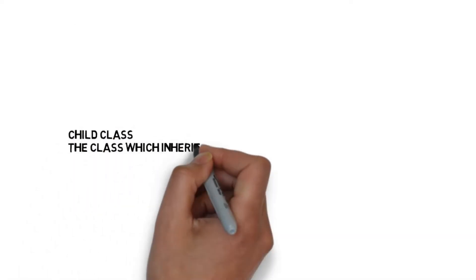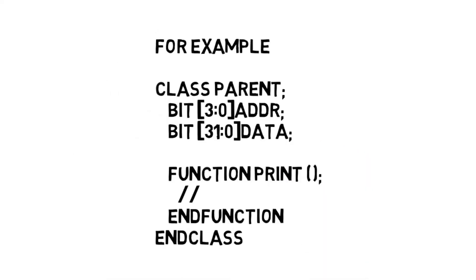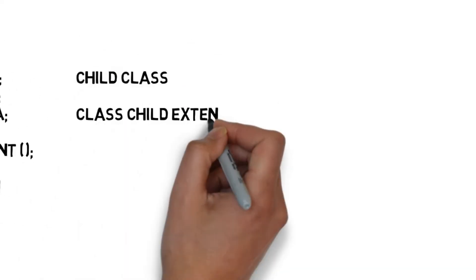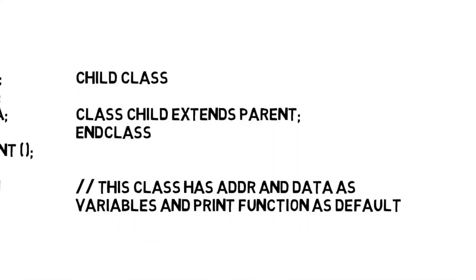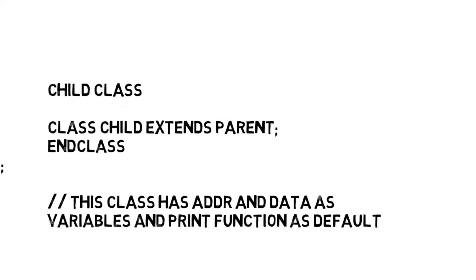So what exactly is a child class? It is the class which inherits all the properties from the parent. In the previous video, we learned how to write a class — class parent — which has variables address and data, and a function print. Now let's learn how to write a child class: 'child class extends parent'. This is how we write a child class. By default, the child class has variables address and data from the parent, and the function print.